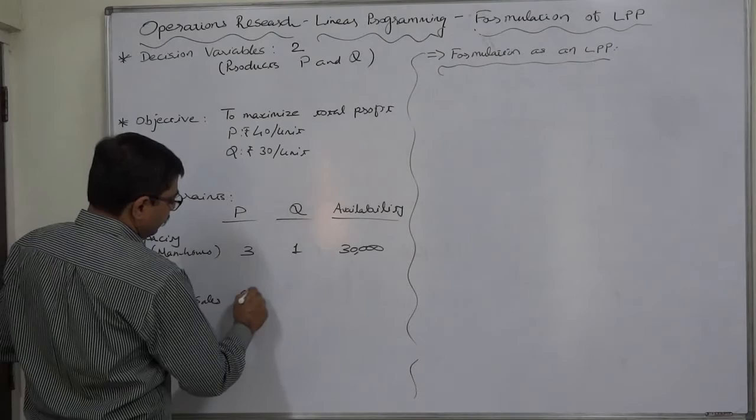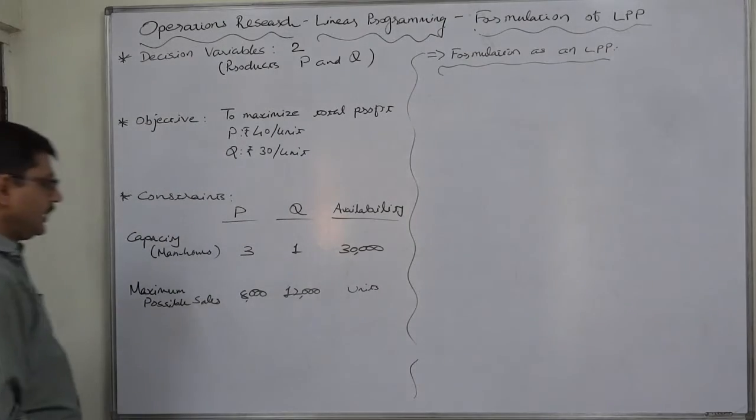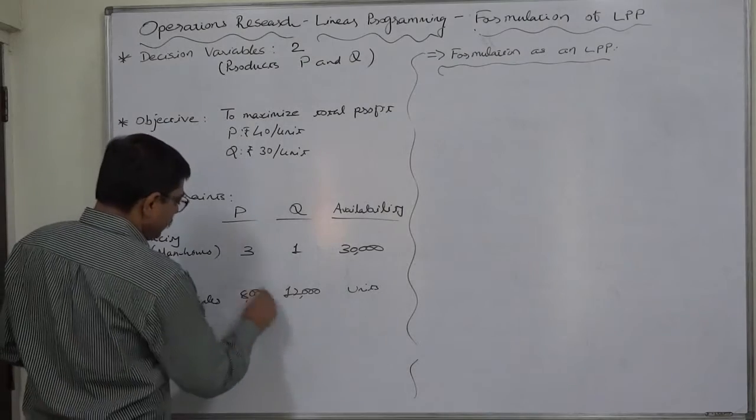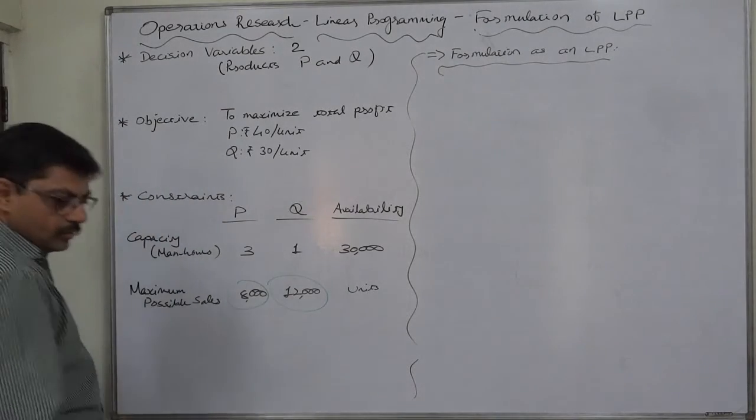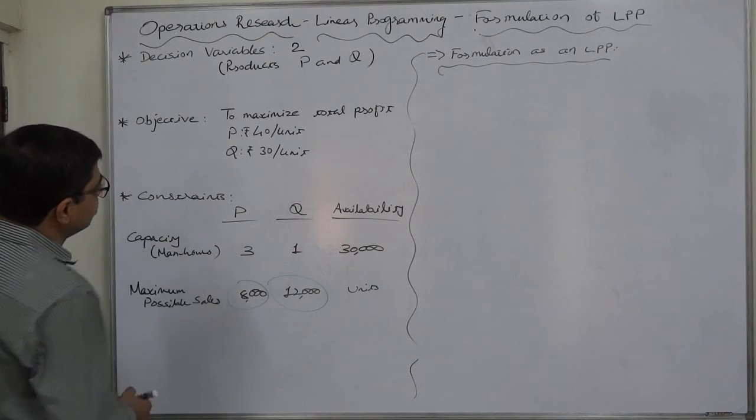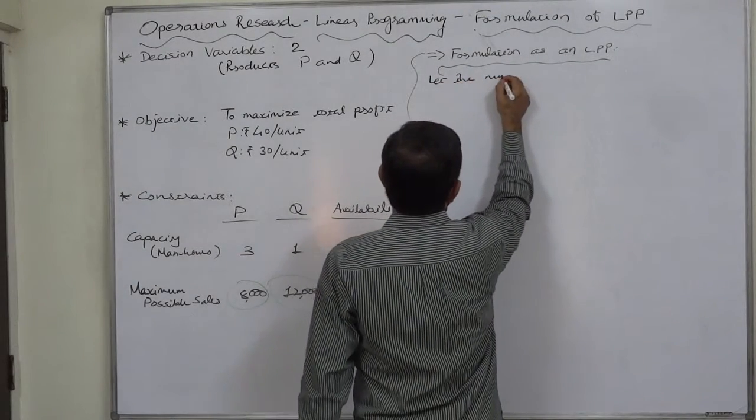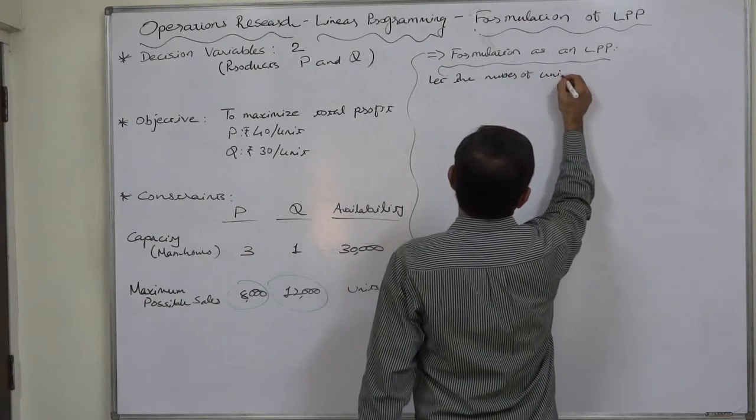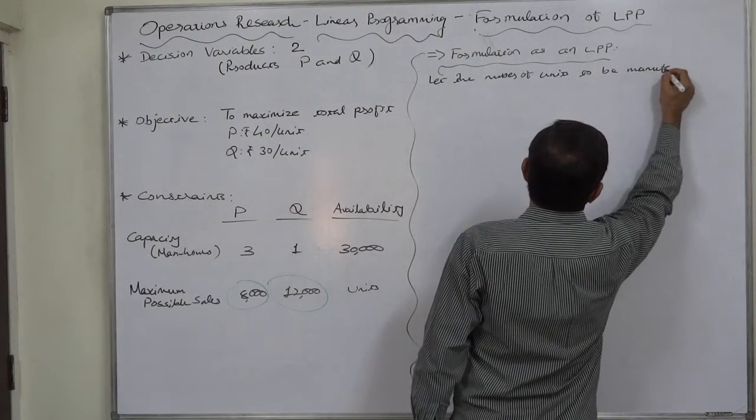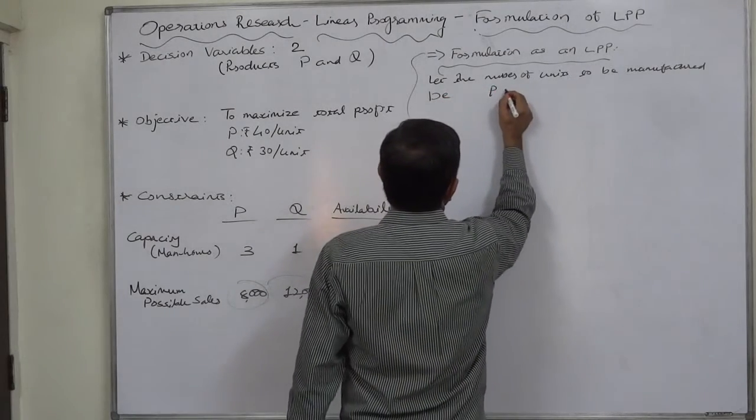Maximum sales: 8,000 units of P and 12,000 units of Q. There are only two constraints, but as we are well aware, these two are individual - no single equation can be formed from these statistics. So now we can formulate: let the number of units to be manufactured be P = X₁ and Q = X₂, to maximize total profit.